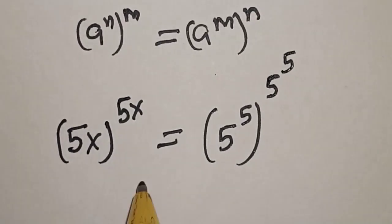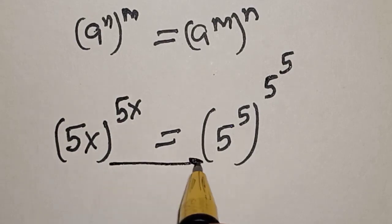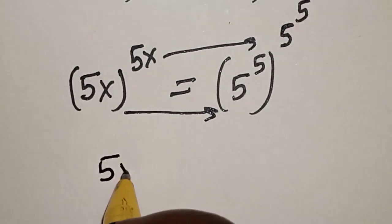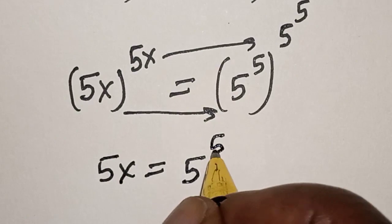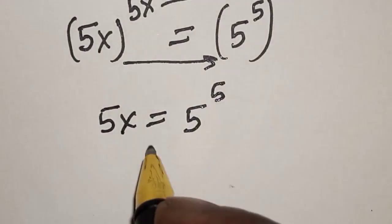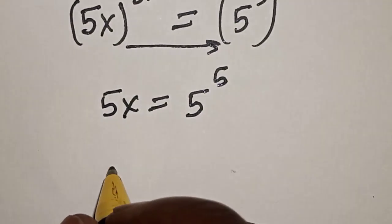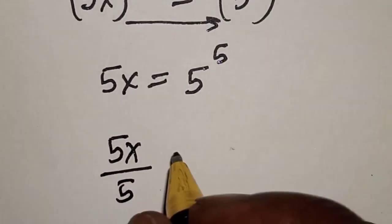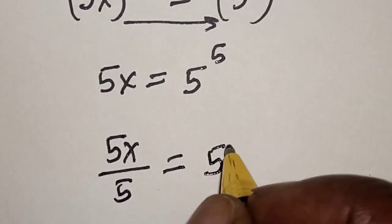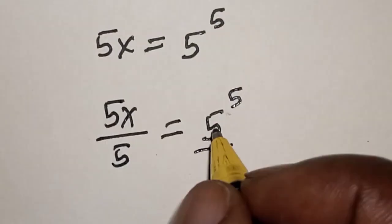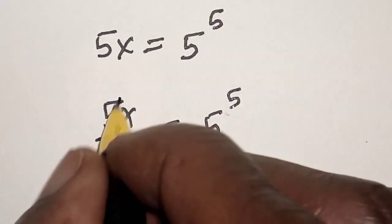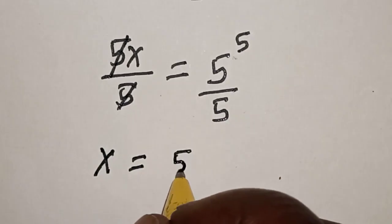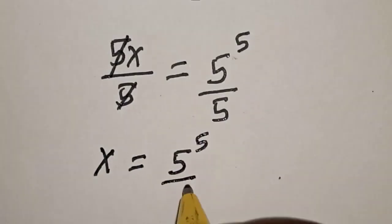Then, by comparing — remember this rule that if you have a raised to power n raised to power m, this is equal to a raised to power m raised to power n — if you look at this very well, this is equal to this and this is equal to this. Therefore, 5s is equal to 5 raised to power 5.